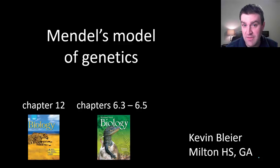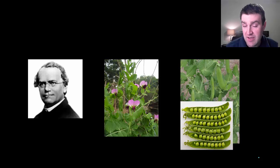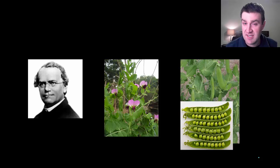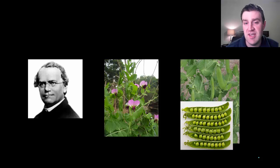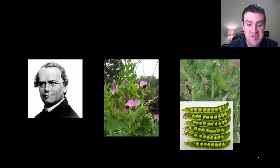Gregor Mendel in the mid-1800s was really a monk. He wouldn't consider himself a scientist, but he did notice patterns in how traits were passed through the generations of the pea plants that he grew in the monastery's vegetable garden.